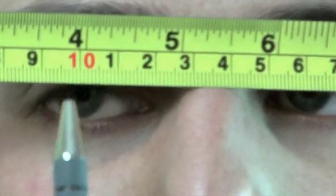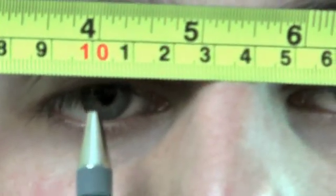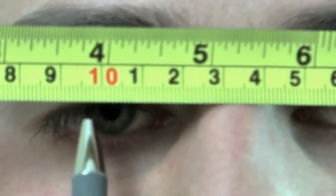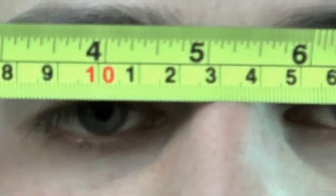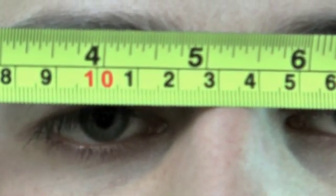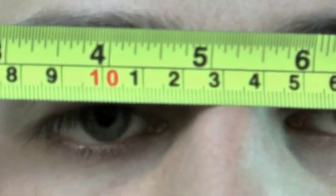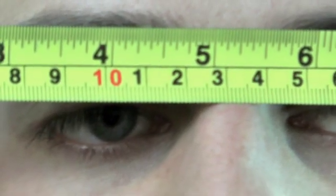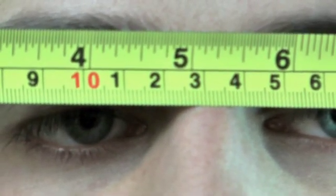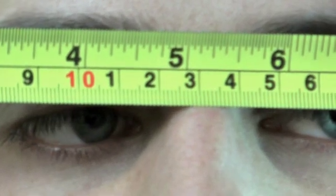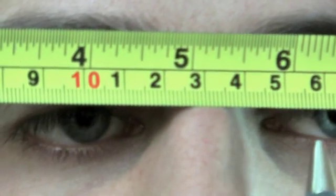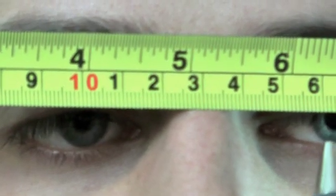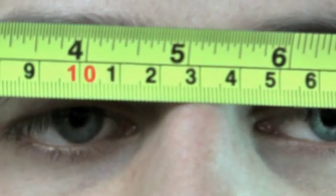I then ask the patient to keep looking at the pen and to follow it with their eye as I move it. So he's now looking at the pen which is now in front of my right eye. And I measure from the ruler to the inside of the iris of the patient's left eye. And the measurement there is 63.